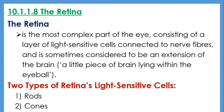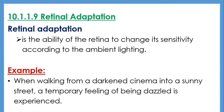The retina contains two types of light-sensitive cells: rods and cones. There are over 100 million rods and about 6 million cones. Rods are more sensitive to light than cones and are essential for scotopic or night vision. Bright light bleaches the rods, rendering them ineffective, and the cone (photopic) system then comes into operation.